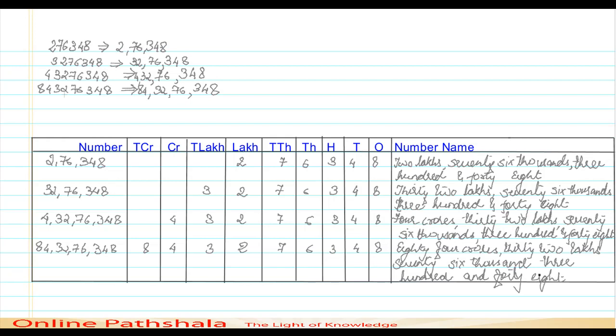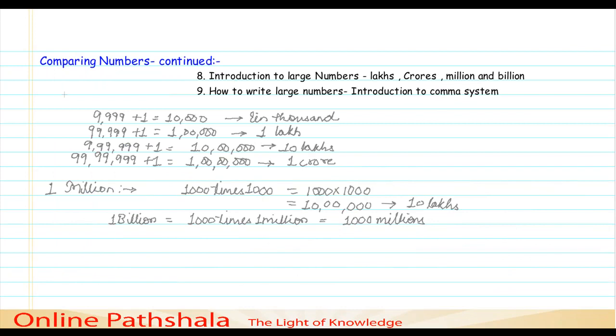I hope you have enjoyed this session. Now let me revise again what we have learned in this session. First we have discussed about what is 1 lakh. 1 lakh is the smallest 6-digit number which comes when we add 1 to 99,999, which is the largest 5-digit number. When we come to crore, crore is denoted by 1 with 7 zeros. That is, it is the smallest 8-digit number.